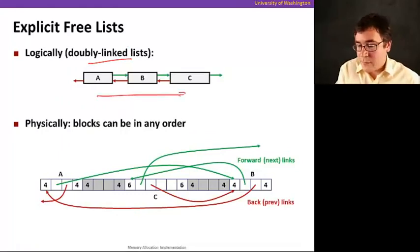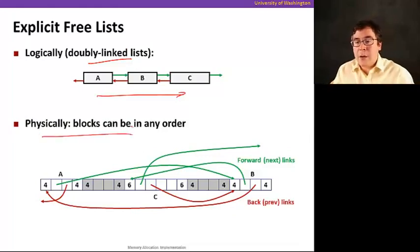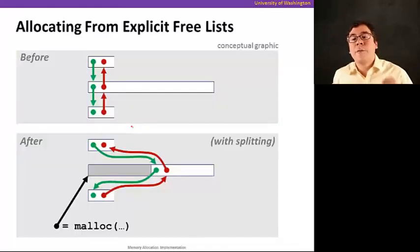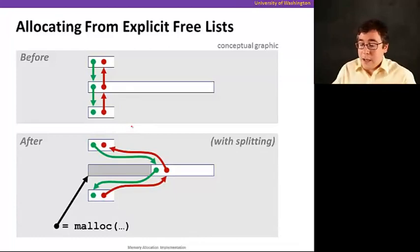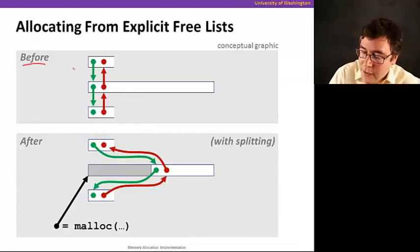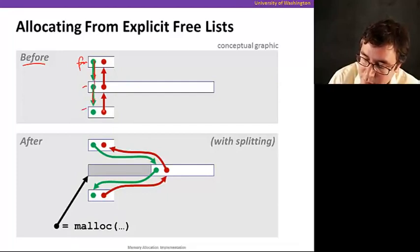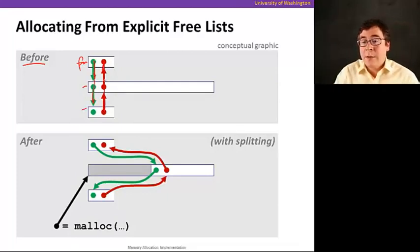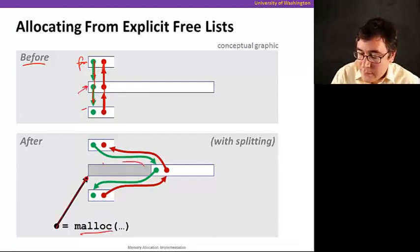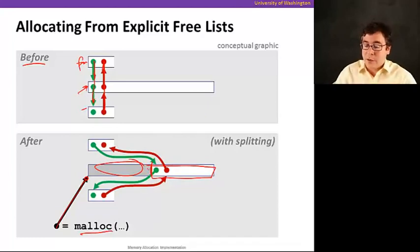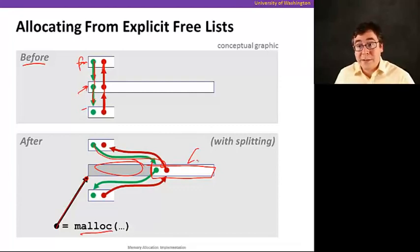Logically it feels like there's some order, but physically when you look at how it's laid out in memory, it could be in any order. When allocating from explicit lists, before allocation we have a pointer to the next block and all blocks are free, pointing in both directions. When we find and choose a block, we return it to malloc — that part is allocated — and whatever is free gets split. We then insert the remainder back into the explicit free list and update the pointers accordingly.